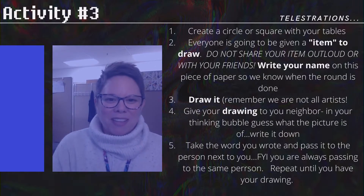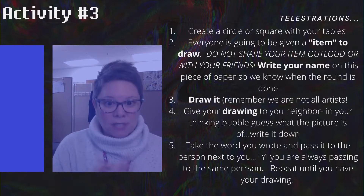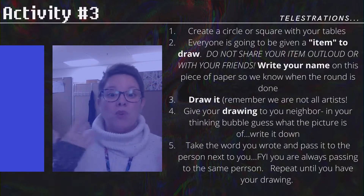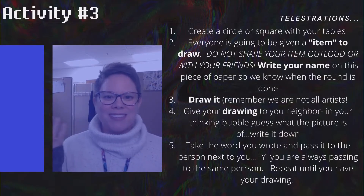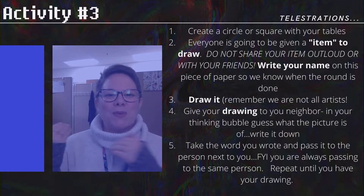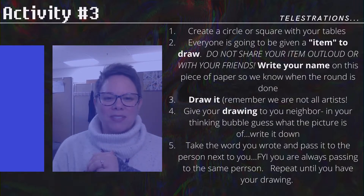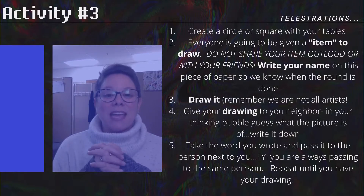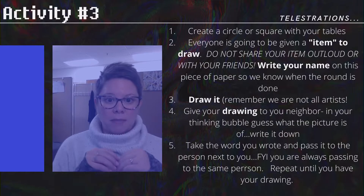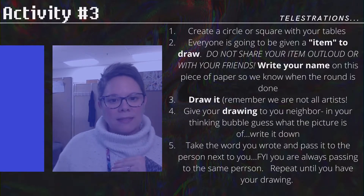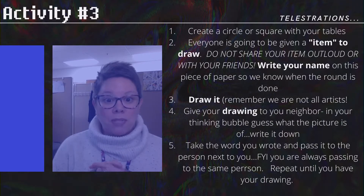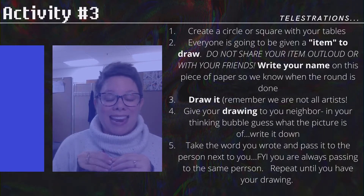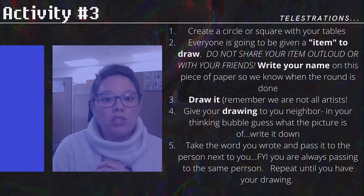Activity number three: you guys are going to be playing a modified game of Telestrations. If you've played this game before, you know that one round you're an artist, and the next time you are the guesser. We're going to set it up so you can play this game. First, create a circle or a square with your tables so that you can easily pass to your neighbor. Everyone is going to be given a Post-it or piece of paper that has an item to draw — that is your starting point.